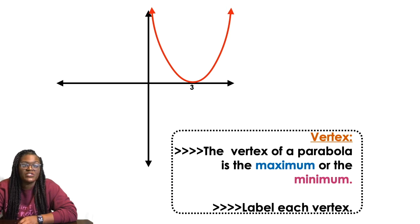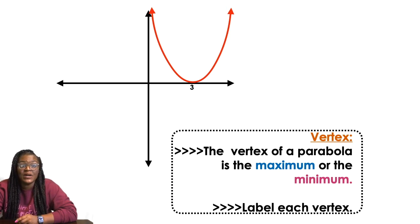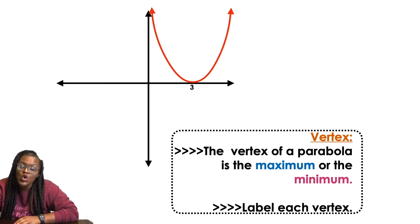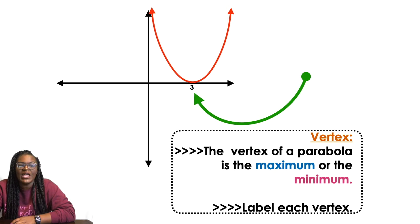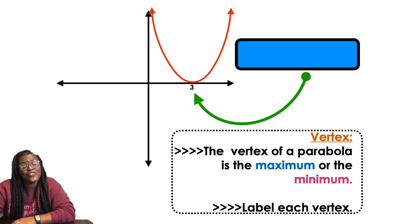Some more characteristics: the vertex of the parabola is the maximum or the minimum, so it's either the high point or the low point. So we're gonna label each vertex. For this one, this has a low point. When it's a happy face, it has a low point, and this low point happens to be at 3.